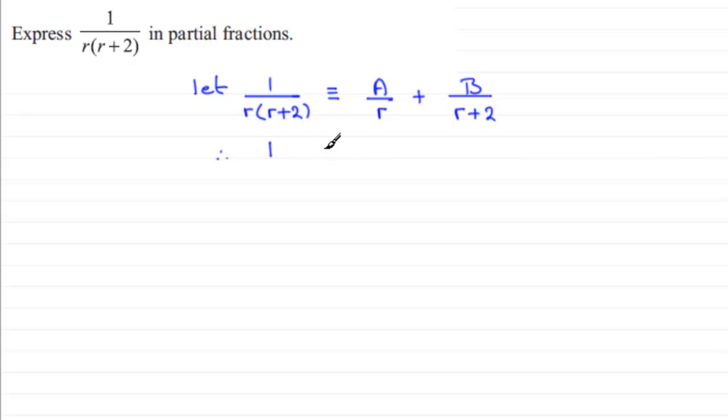It's going to be identical to, and if we take this term the r will cancel out into r times r plus 2 leaving us with A multiplied by r plus 2. And for this fraction here when we multiply this with r times r plus 2 the r plus 2 will cancel out and leave you with B times r.